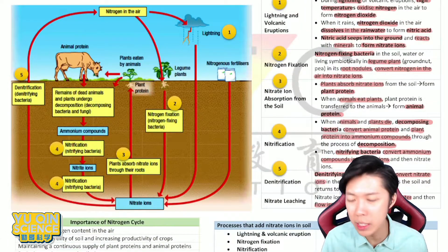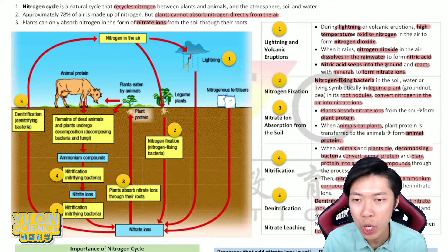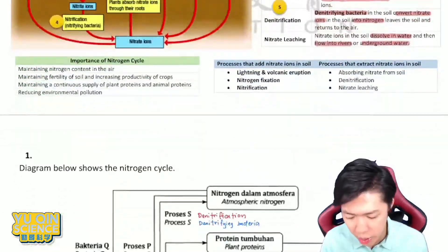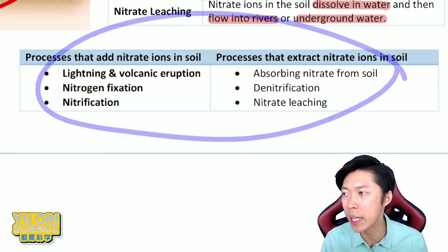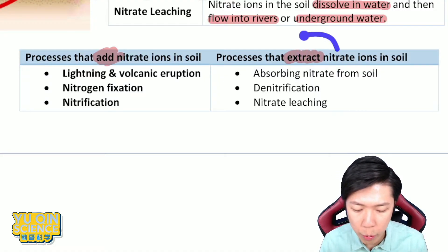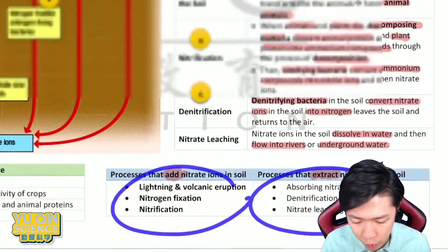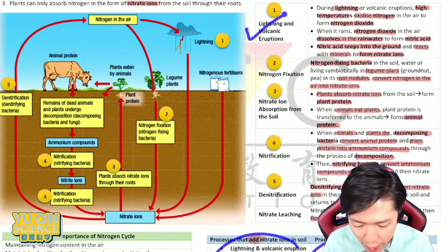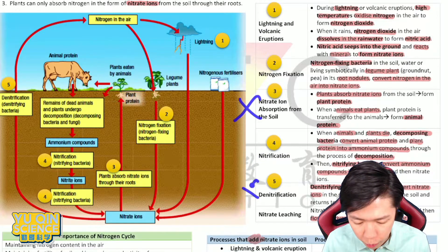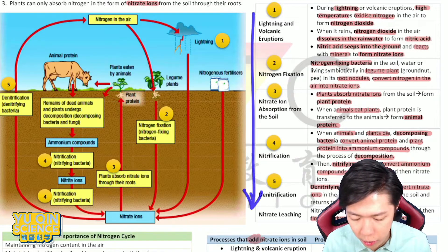This is the full story arranged in sequence. Go through it a few times — it makes more sense rather than memorizing the whole thing. Just remember keywords, especially for lightning since it's a long one. To summarize: some processes add nitrate (lightning, nitrogen fixation, nitrification, fertilizers) and some processes remove/extract nitrate (denitrification, decomposition, leaching). I prefer going through the full cycle sequence as it looks like a circle.